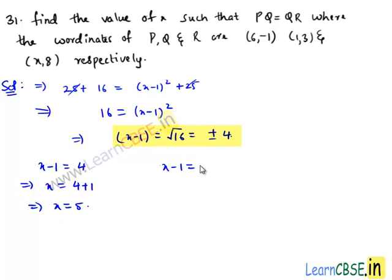Now let us take x-1 equals minus 4. This implies x equals minus 4 plus 1. This implies x equals minus 3. Hence, we got two values of x that is 5 and minus 3.